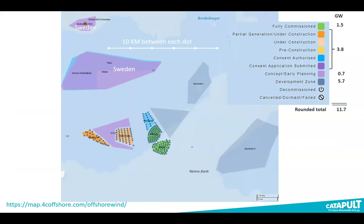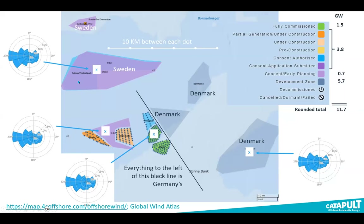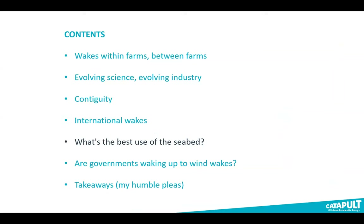Looking at the North Sea, there is capacity belonging to Sweden, Denmark, and Germany — all in close proximity. For half the wind rose, you'd have Swedes waking Danes, and Germans waking each other on the way to waking the Danes. For the other not-insignificant portion of the year, the roles reverse. One wonders whether international law has any precedent offering guidance here.